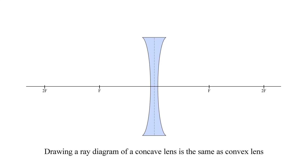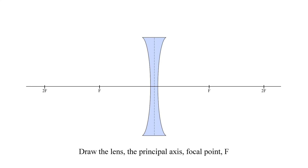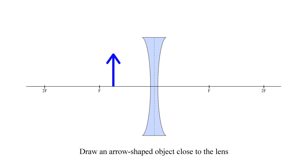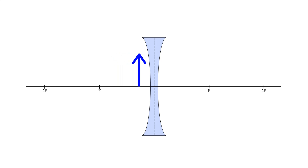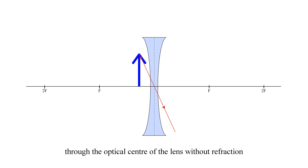Drawing a ray diagram of a concave lens is the same as a convex lens. Draw the lens, the principal axis, and focal points, F. Draw an arrow-shaped object close to the lens. Draw a ray of light from the head of the object through the optical center of the lens.